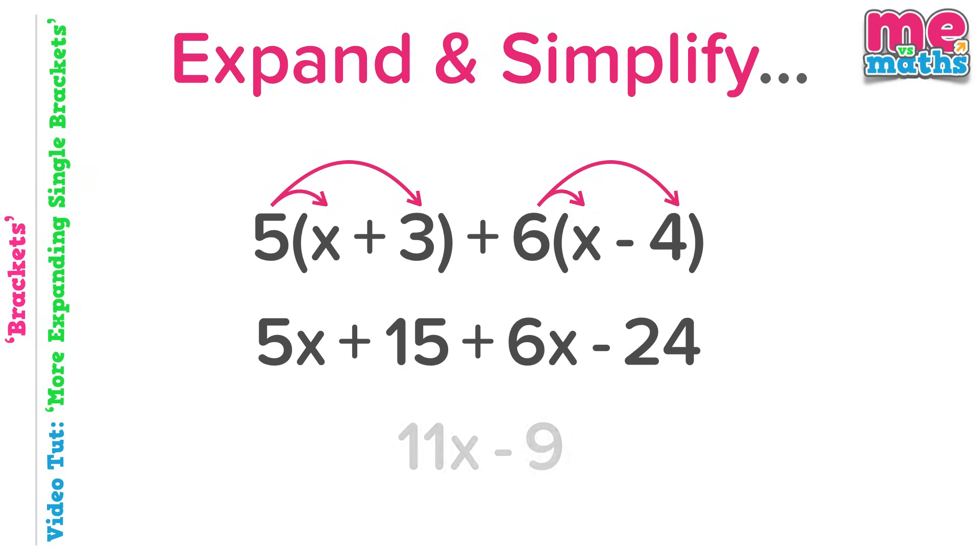I'll show you the result first which is this, and let's see how we got this simplified expression. We had 5x plus 6x which made 11x, and we also had plus fifteen minus twenty-four which gave us minus nine. Why? Well, if we start fifteen above zero and go down twenty-four, we will get to minus nine.